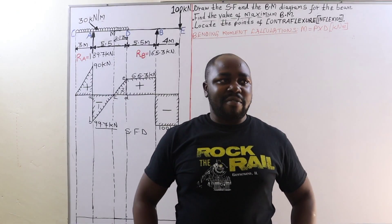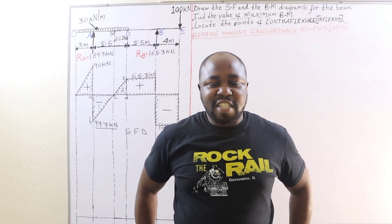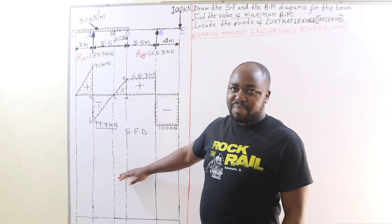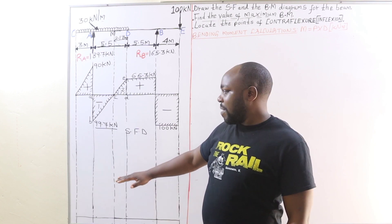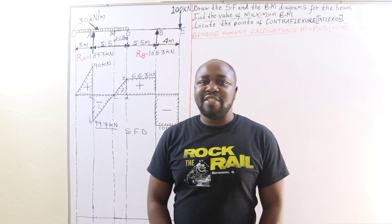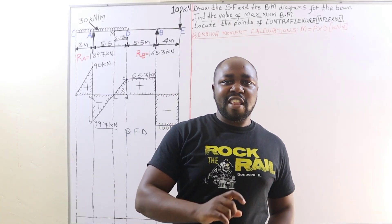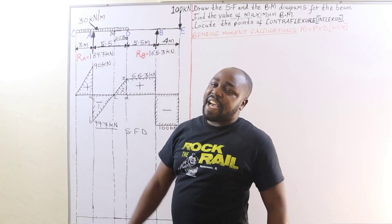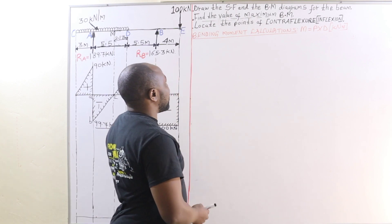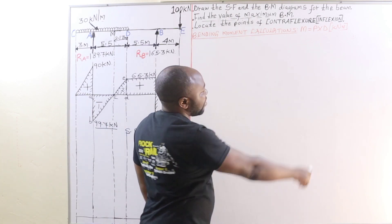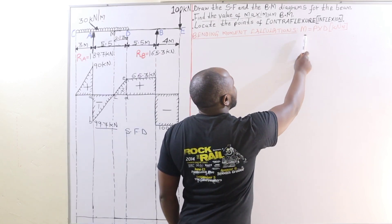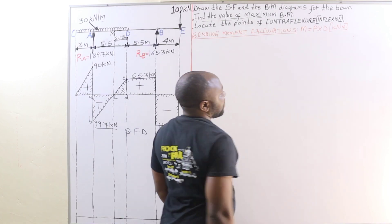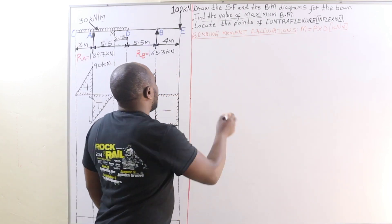Hello and welcome. We had already plotted the shear force diagram, and below it we are supposed to plot a bending moment diagram. To plot the bending moment diagram we need to determine the values of all the bending moments at all the points on our overhanging beam. Bending moment is given by load times distance, with units of kilo-Newton-meters.